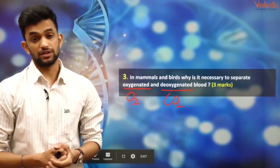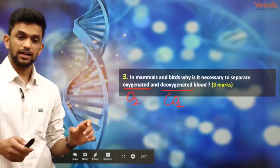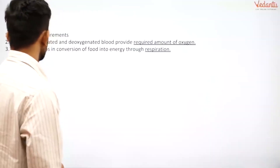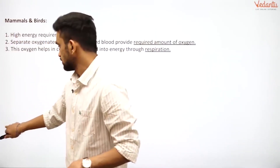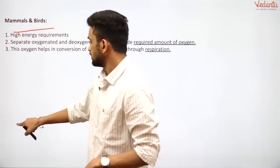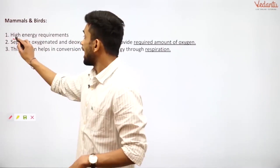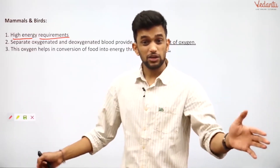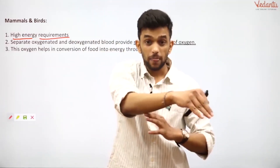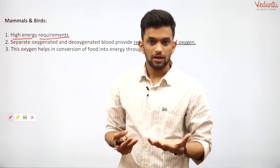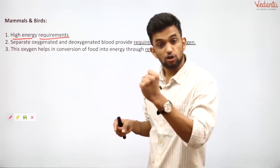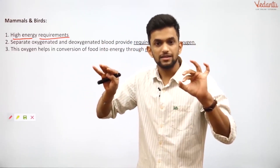Mammals and birds have high energy requirements — compared to amphibians and reptiles, which have lesser requirements. Birds keep flying all day, needing lots of energy, and we humans are constantly moving and using our brains. All these activities need lots of energy, so keeping oxygen and carbon dioxide separate increases efficiency.